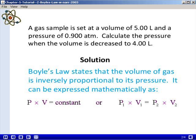In this equation, P1 and V1 are the initial pressure and initial volume of the gas, and P2 and V2 are the final pressure and final volume of the gas.